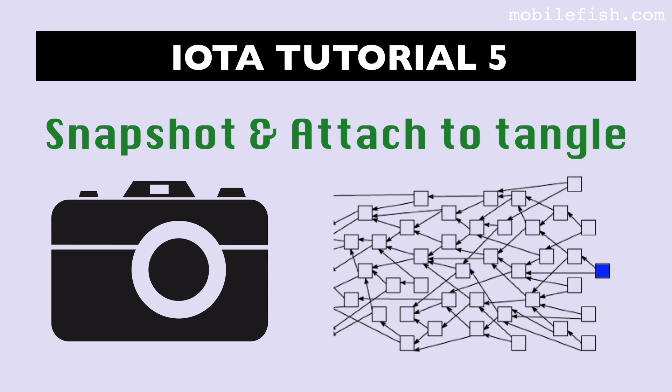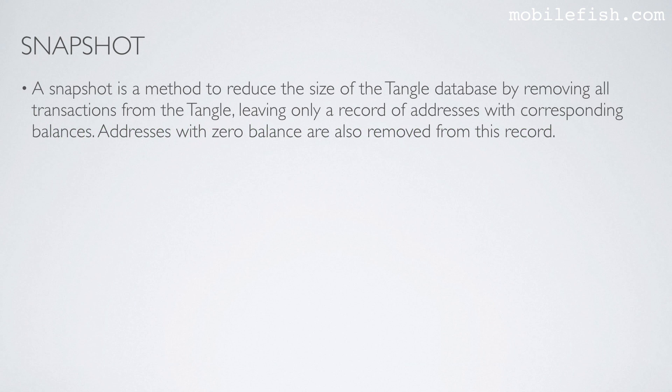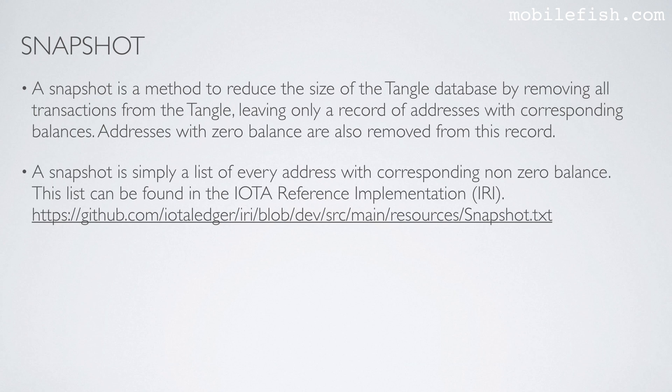In this video I will explain what the snapshot is and why it is needed, and I will explain what attach to tangle means and why you need to attach addresses to the tangle. A snapshot is a method to reduce the size of the tangle database by removing all transactions from the tangle, leaving only a record of addresses with corresponding balances. Addresses with zero balance are also removed. A snapshot is simply a list of every address with corresponding non-zero balance.